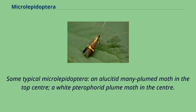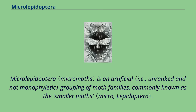Some typical microlepidoptera: an elucidid many-plumed moth in the top center, a white pterifarid plume moth in the center. Microlepidoptera is an artificial grouping of moth families, commonly known as the smaller moths.